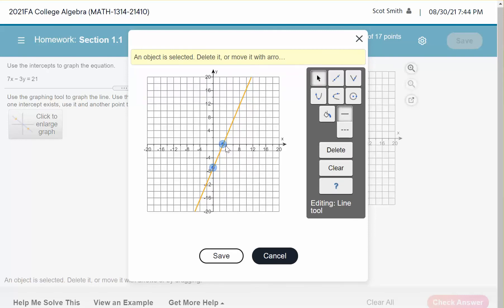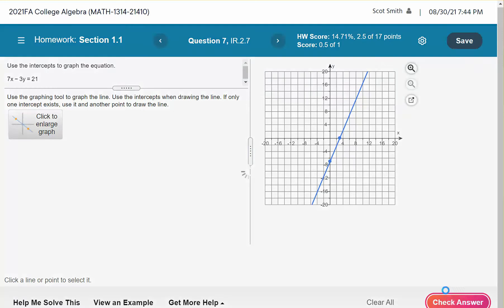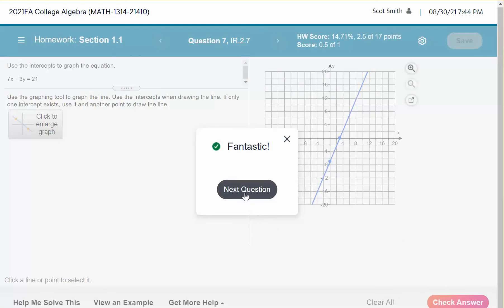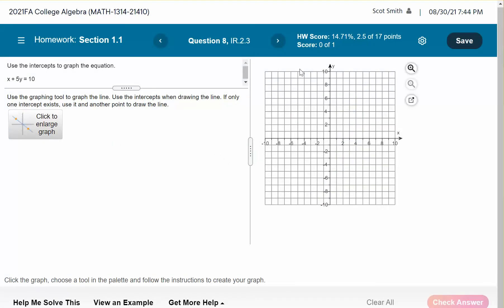And so now you can see I've got the point at 3, 0, and 0, negative 7. So I'm going to save this. I'm going to check my answer, and you can see we're good. Let's go to number 11.